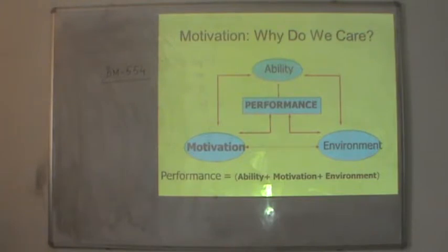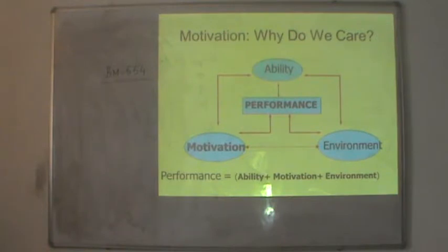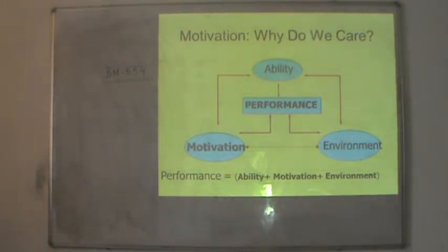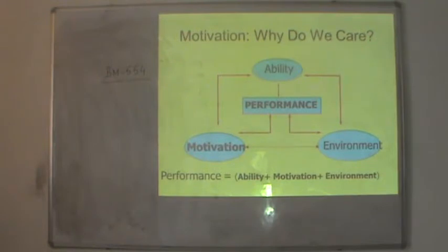Motivation means that people are trying hard to do something and must do their job well. Ability means they must be able to do their job effectively. And environment means they must have the resources, equipment and all information to perform that particular job. So it is very clear that motivation is an inner drive which pushes performance from employees and yields them the desired results.